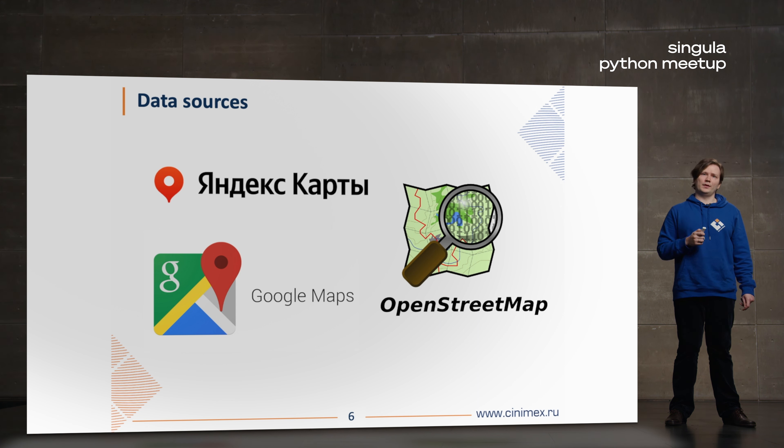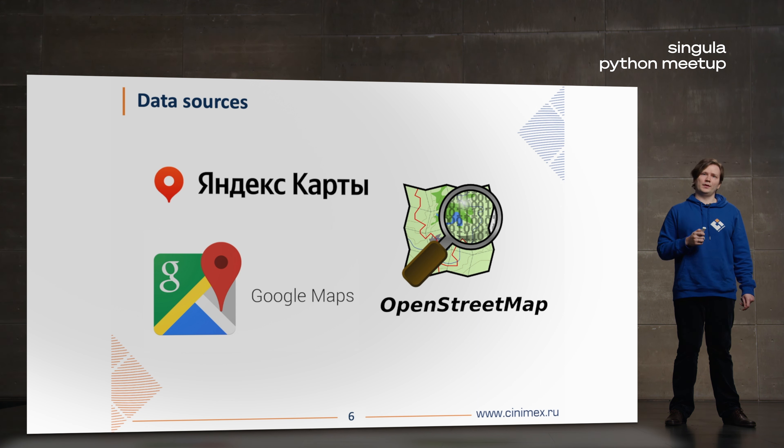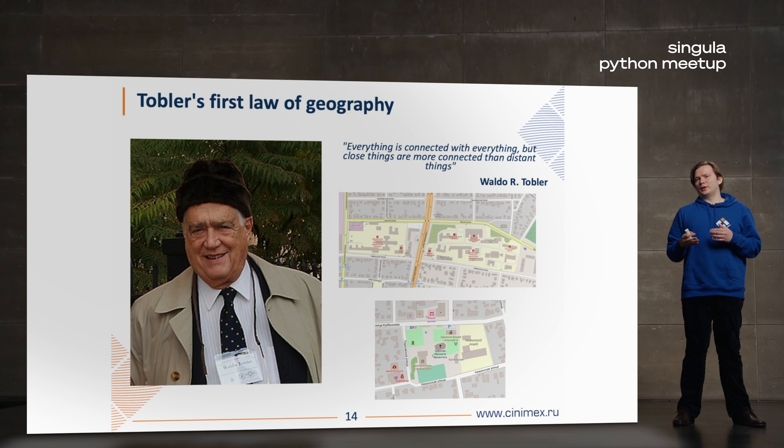In many cases, polygons and shapes don't give information by themselves — you also want to know their relationships with each other. Waldo Tobler's first law of geography says that everything is connected with everything, but closer things are more connected than distant ones. As an example, you can see on the map two different hospitals — a general one and an infectious one — which also have different types of buildings connected with medical work, such as pharmacies or medical student dormitories.